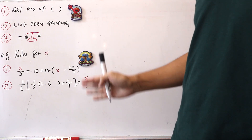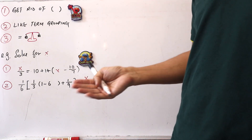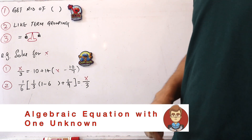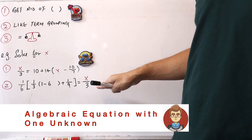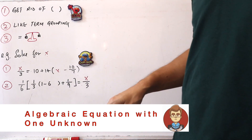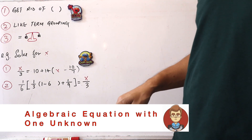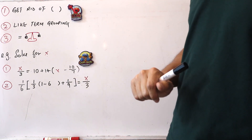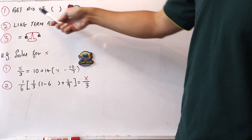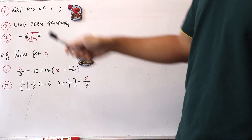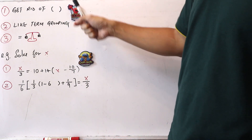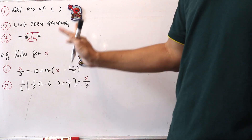For most students, these two examples will show up in a chapter called Algebraic Equation in One Unknown. Some students, when they see these questions, will feel very challenged because these questions seem to involve a lot of mathematical operations. But I'm going to teach you a simple way to do it. All you need to do is follow three highlights I've written here. The first thing you want to do is to get rid of the brackets as soon as possible.